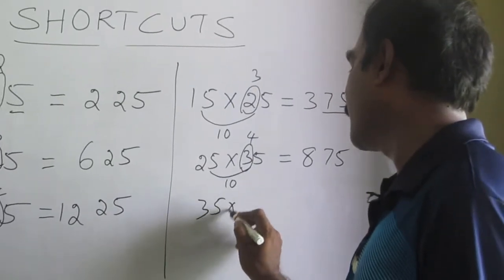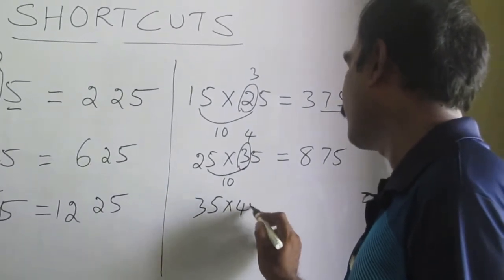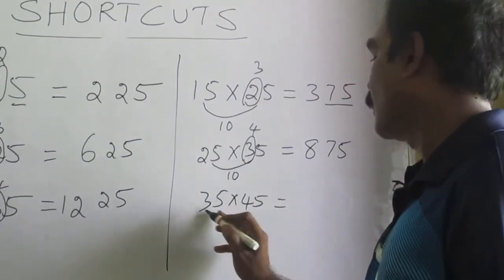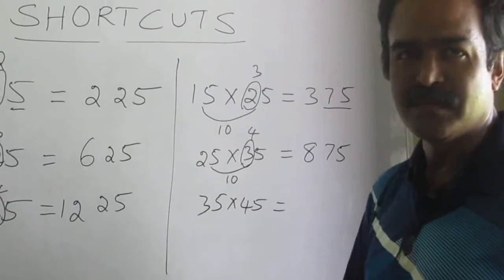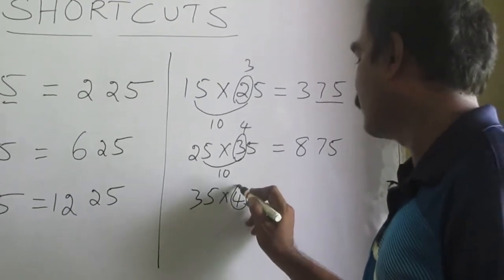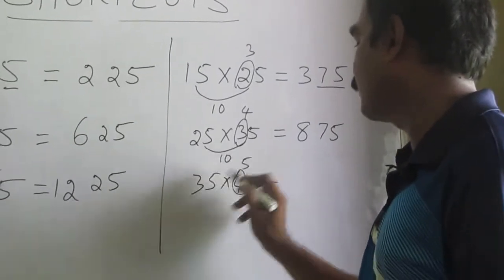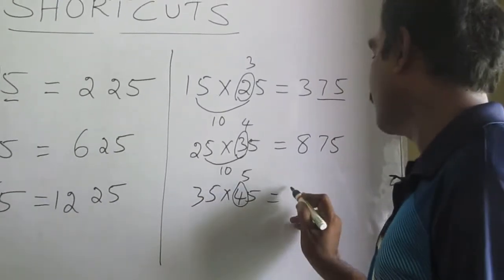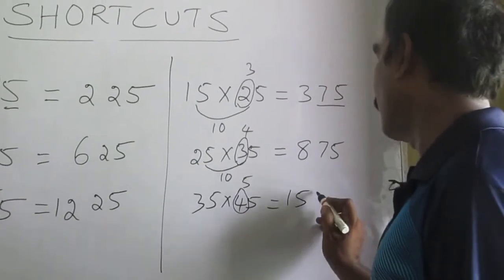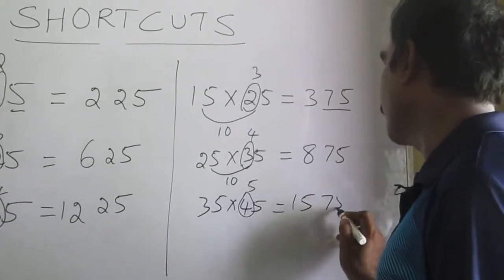35 times 45. The gap between the numbers is 10. Increase this number by one more: 3 times 5 is 15. And the last two digits are 75. So the answer is 1575.